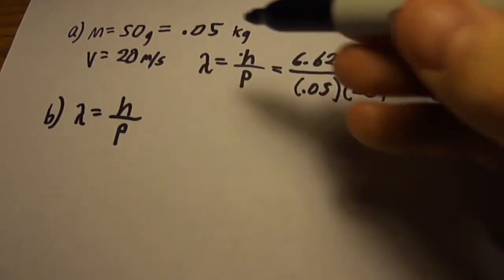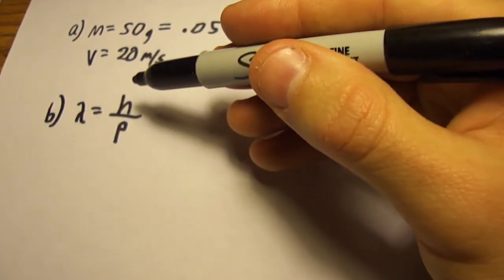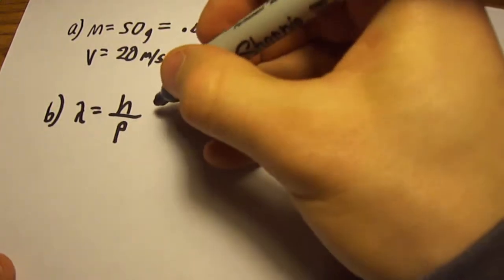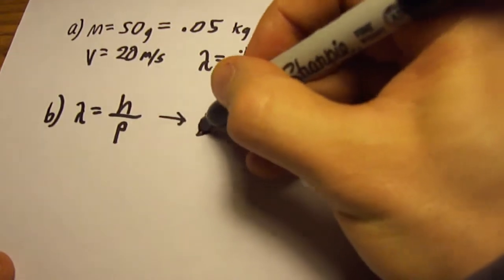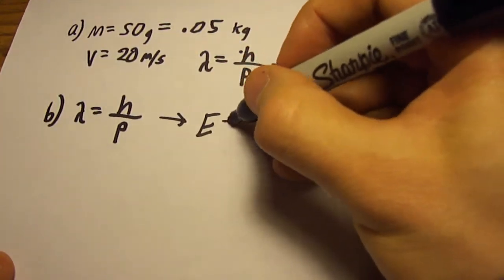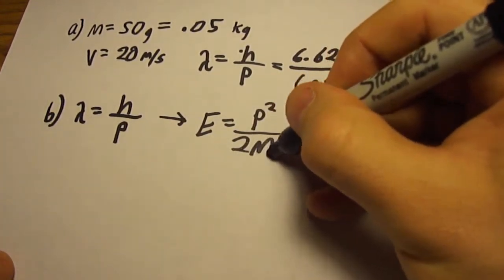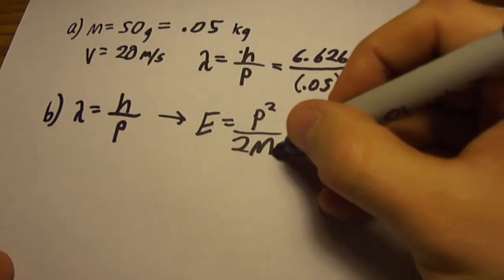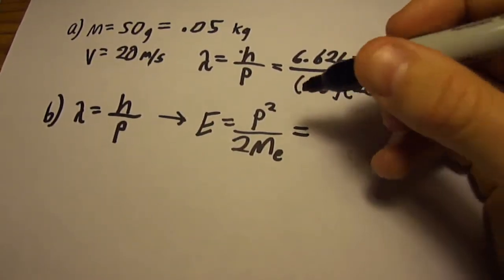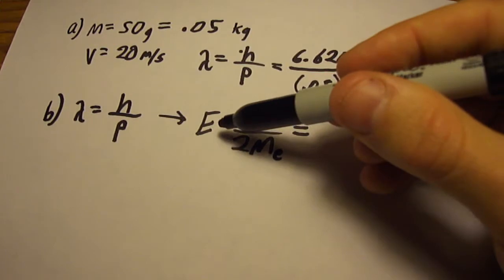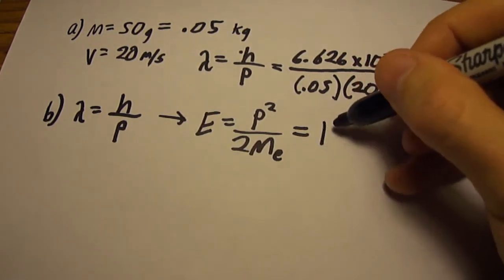But in this case, the momentum of an electron is not given by mv. We can solve for it using the equation for energy, which is the momentum squared over 2 times the mass. We know the mass of an electron — it's a constant we can look up — and the problem gives us that the energy is 10 electron volts.